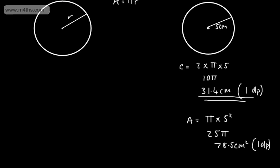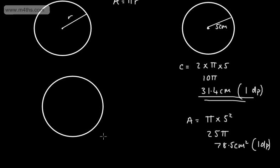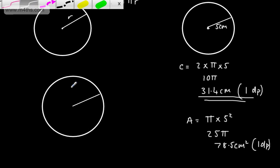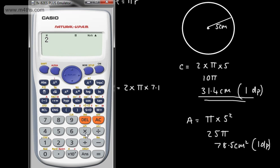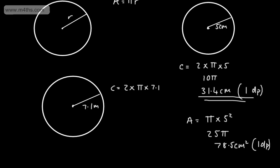Let's do another example. This time the radius is 7.1 metres and we want to find the circumference. The circumference will be 2 times pi times 7.1. Putting this in the calculator, 2 × π × 7.1 gives 44.6. So the circumference is 44.6 metres, to one decimal place.